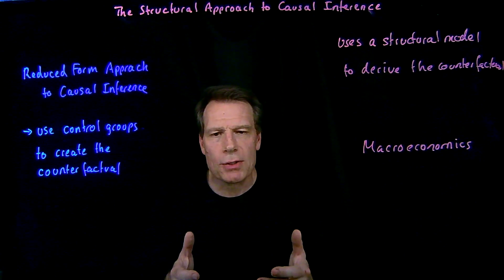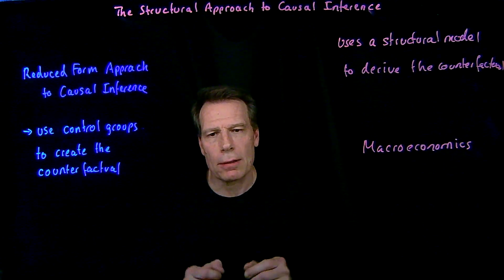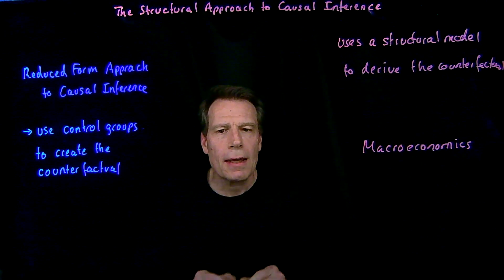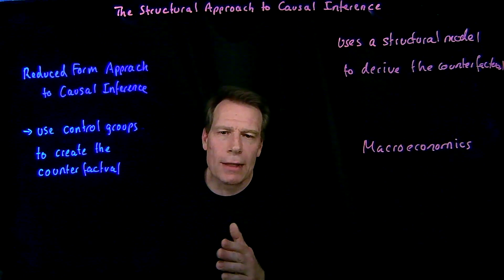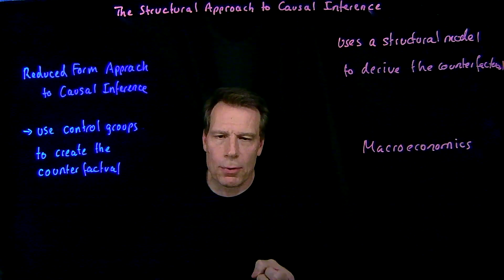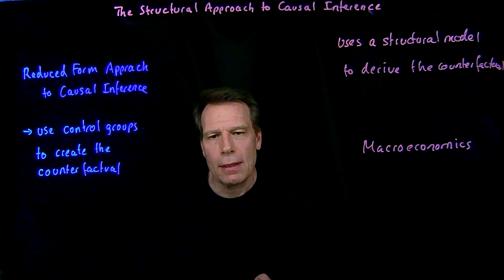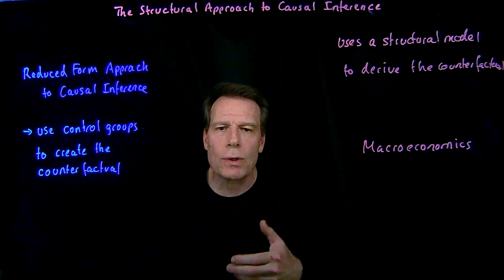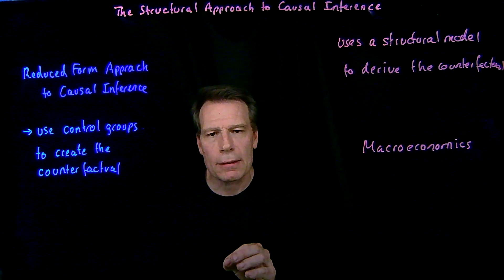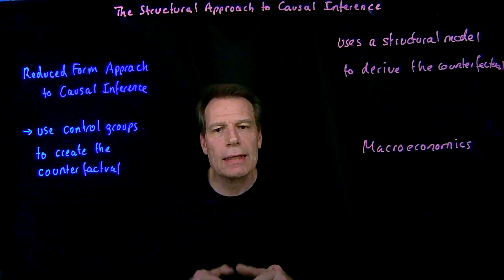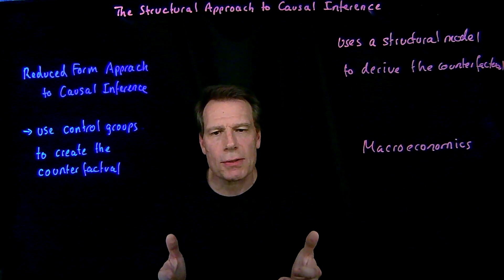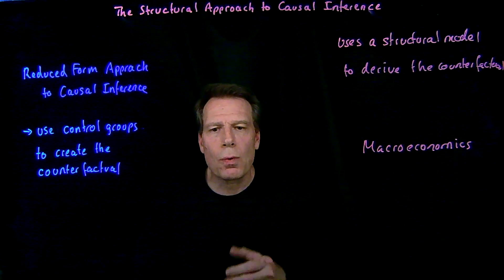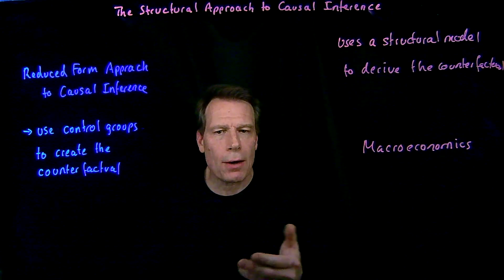So macroeconomists create a model of the US economy, using all the information available and the best thinking within economics, to find a model that accurately predicts macroeconomic changes. Then they look back at 2008 and rerun the model — just like the climate scientists did — but take the stimulus program the government passed after the recession and see what would have happened to unemployment or GDP had the stimulus not been put in place. That creates a counterfactual to measure the causal impact of the stimulus program.